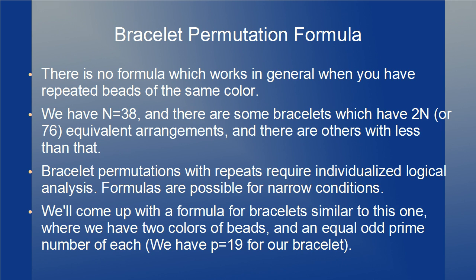Since we have repeats on our bracelet, the formula doesn't hold. We have a bracelet where n equals 38, and although many bracelets produce sets of 2n or 76 arrangements, we also have some bracelets with symmetry that repeat some arrangements as we rotate and flip through all 76 positions. Bracelet permutations with repeats require special analysis to determine the number of bracelets and defy attempts to reduce the answer to a simple formula — the formulas usually work only under narrow conditions.